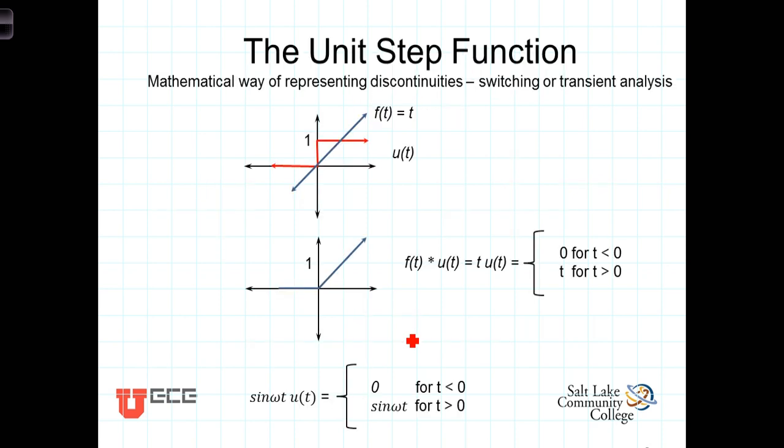We can use the step function to model switching other functions on and off. For example, here we have a time function f of T that's defined for all time as simply the value T. Here we have the unit step function. We can multiply the time function f of T times u of T, or have then T u of T, which creates this effect.